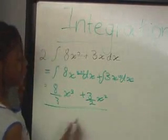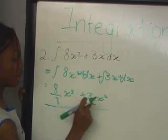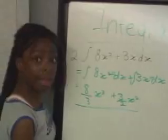So you're left with 8 divided by 3 x cubed, plus 3 divided by 2 x squared. Come back tomorrow for more mathematics.